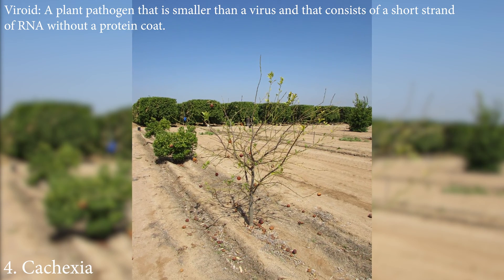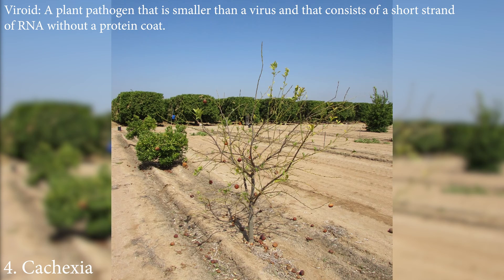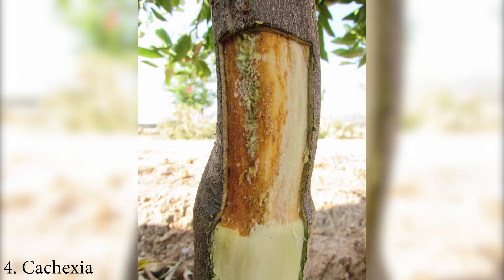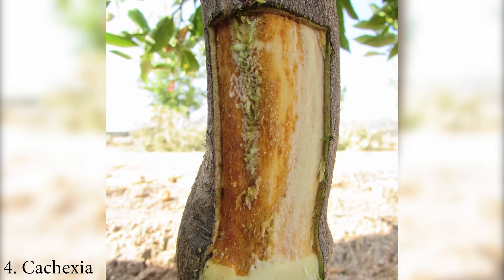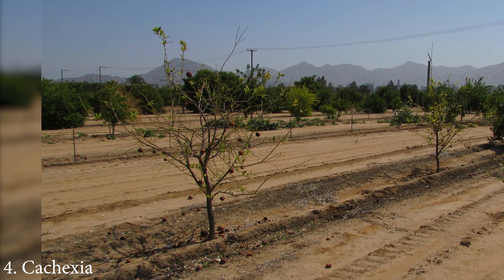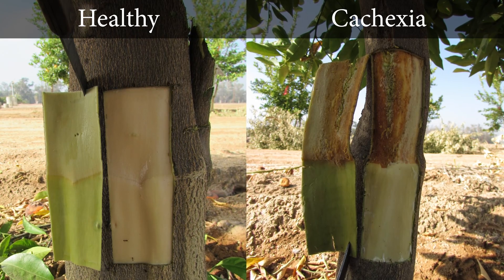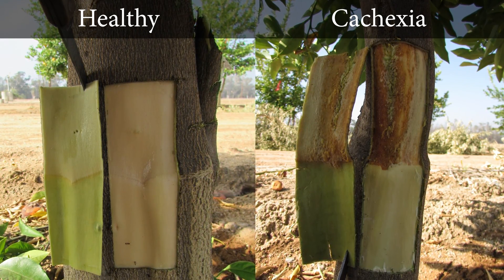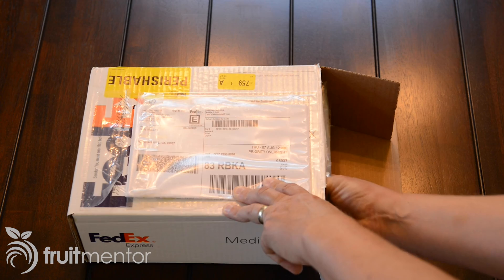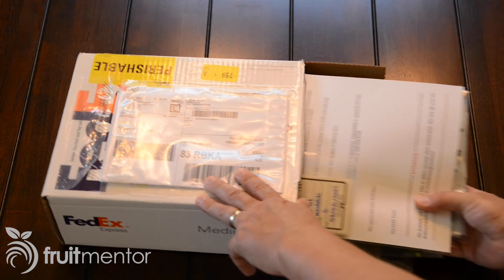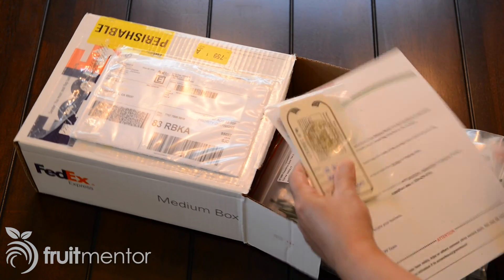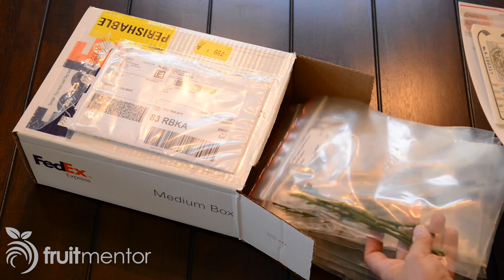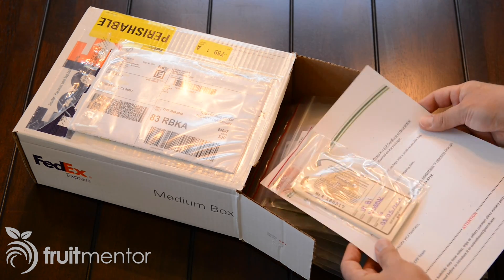Cachexia is a viroid disease of citrus that affects mandarins, kumquats, and some mandarin hybrids. The effects on citrus trees vary from stunting to tree decline and death. Cachexia is transmitted primarily by grafting and contaminated pruning tools. The use of pathogen-free budwood from California's Citrus Budwood Program, the Citrus Clonal Protection Program, or CCPP, has reduced the prevalence of this disease in California.